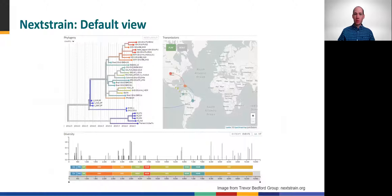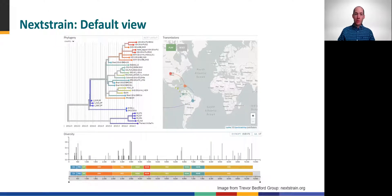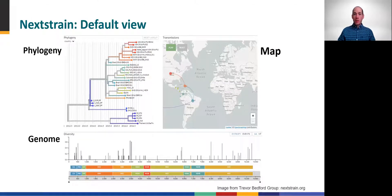Nextstrain is a powerful tool for many purposes, but especially for data visualization. If you have visited nextstrain.org or seen any reports from the Nextstrain team, you will recognize this default three-panel view: a phylogenetic tree, a geographic map, and a genome sequence map, which together provide a comprehensive look at your data.